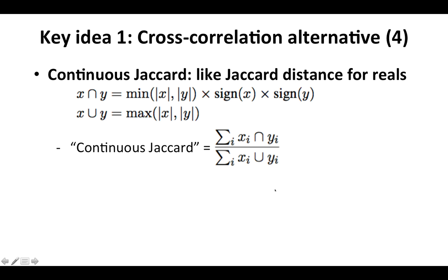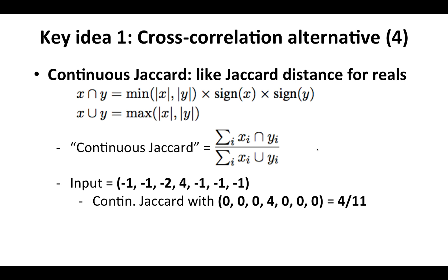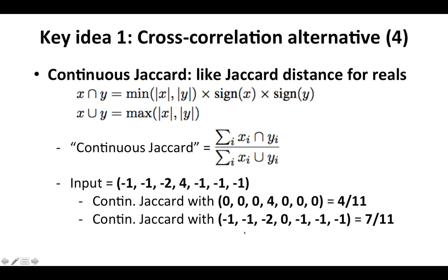The continuous Jaccard similarity: I think of it like a Jaccard distance for real numbers. The intersection of x and y is the min of the absolute values, and it gets a positive sign if the signs of x and y agree, and a negative sign if the signs disagree. The union of x and y is the max of the absolute values. You take element-wise intersections, sum them up, divide by the sum of element-wise unions — analogous to an actual Jaccard similarity. Going back to our toy example, the continuous Jaccard similarity with the first vector is 4 out of 11, and with the second vector is 7 out of 11, so it picks the second vector as more similar.